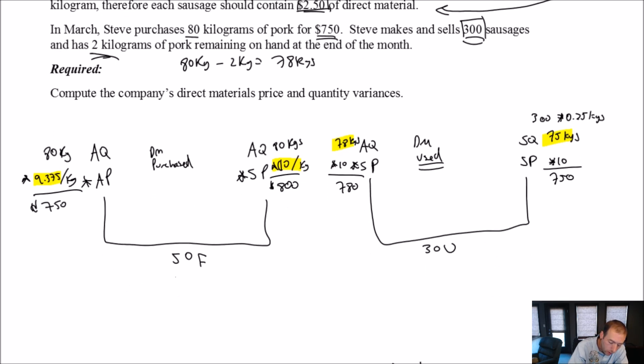We call the one on the left, the direct materials price variance. And the variance on the right is the direct materials quantity variance. And let's pause for a moment. So we've answered the question. Compute the direct materials price and quantity variances. Done, right? Like we've answered the question.